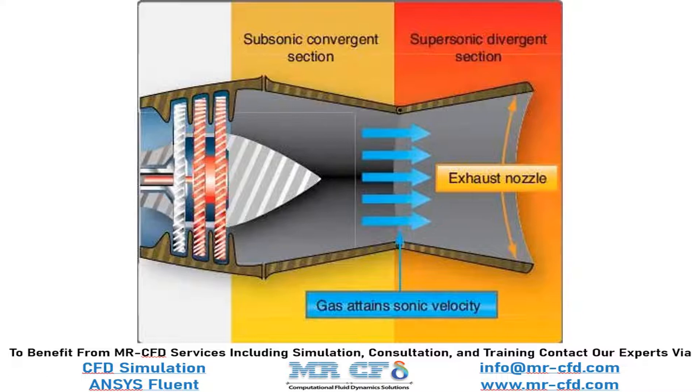It is used to accelerate a hot pressurized gas passing through it into a higher supersonic speed in the axial or thrust direction by converting the heat energy of the flow into kinetic energy. Because of this, the nozzle is widely used in some types of steam turbines and rocket engine nozzles.